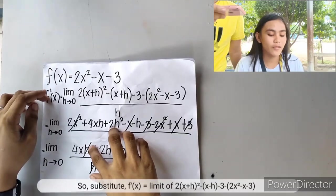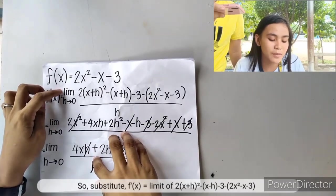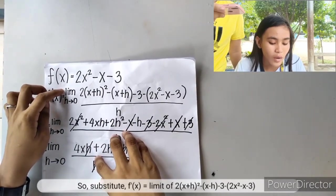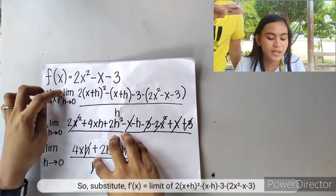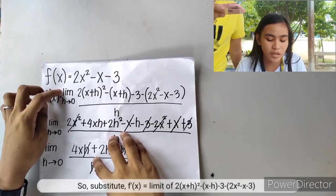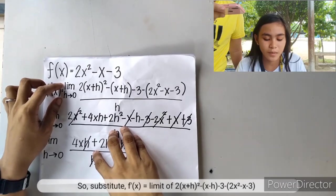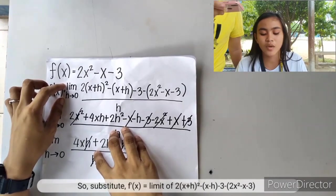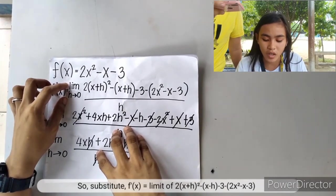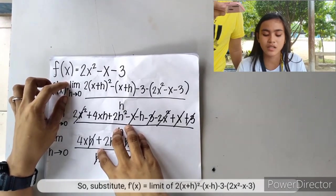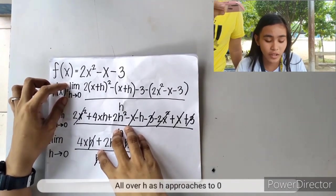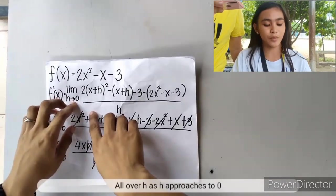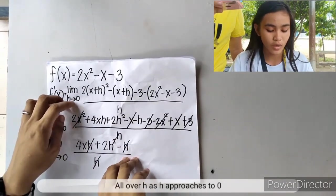Substitute: f prime equals the limit of 2(x+h) squared minus (x+h) minus 3, minus the quantity 2x squared minus x minus 3, all over h as h approaches 0.